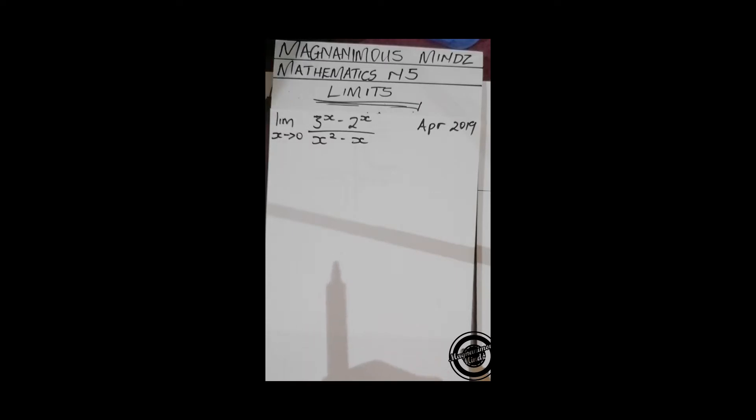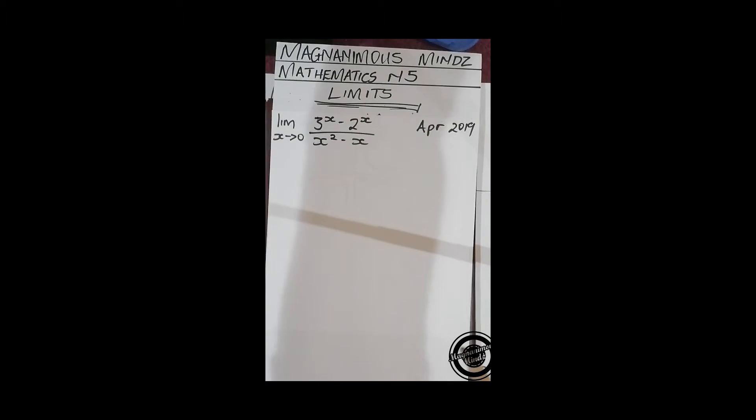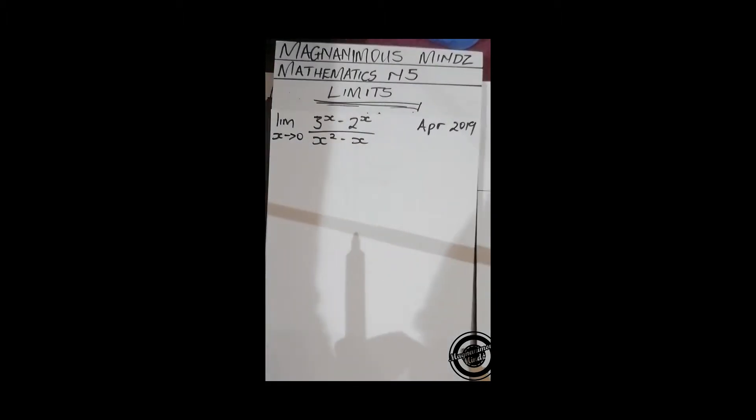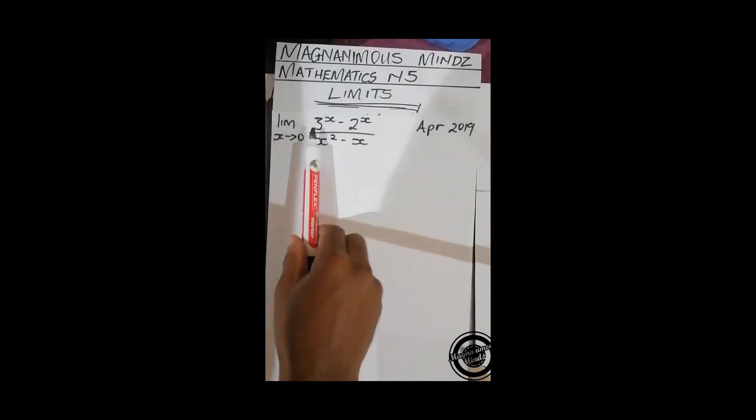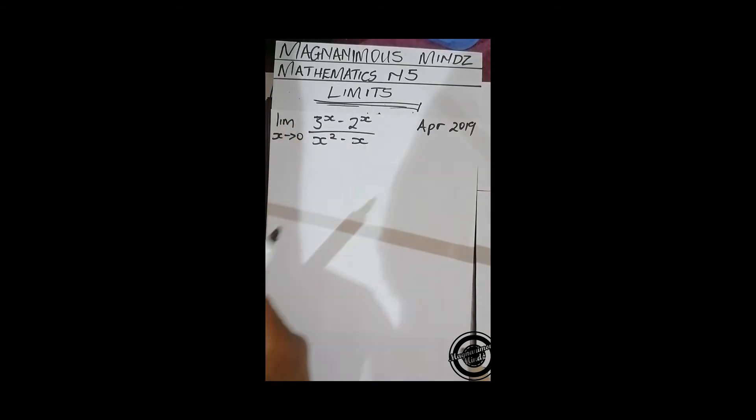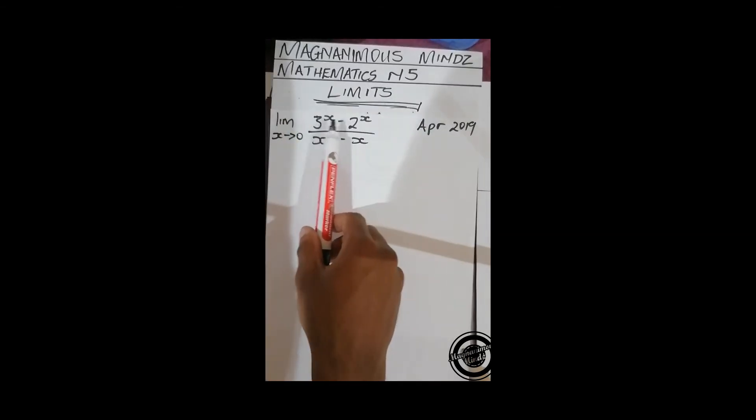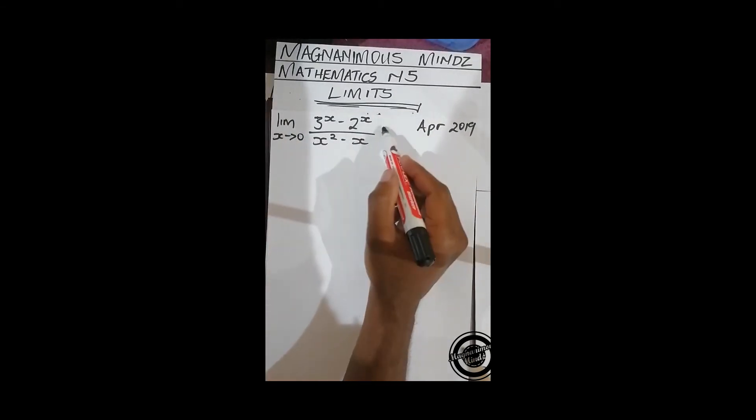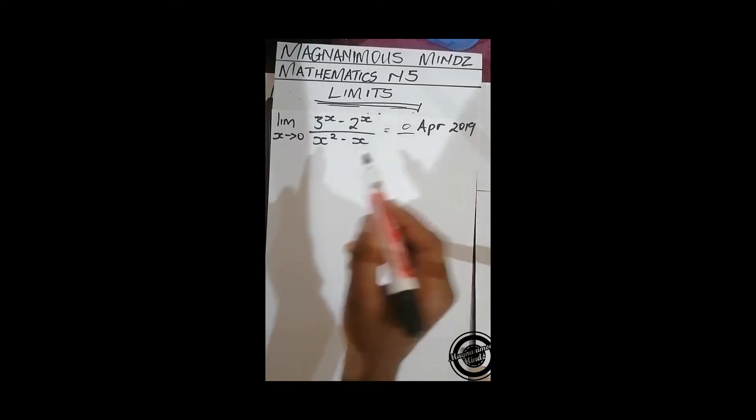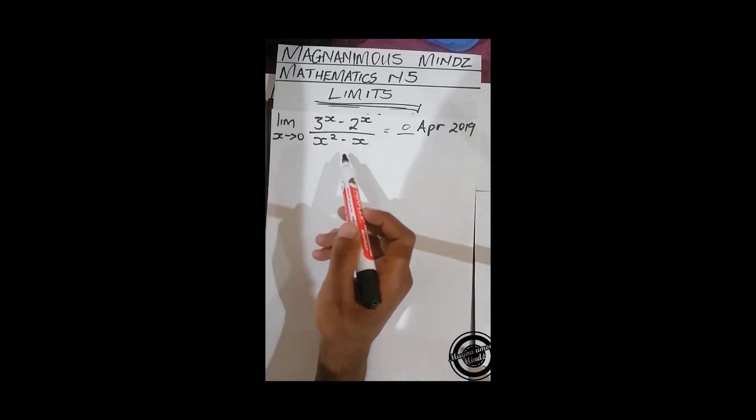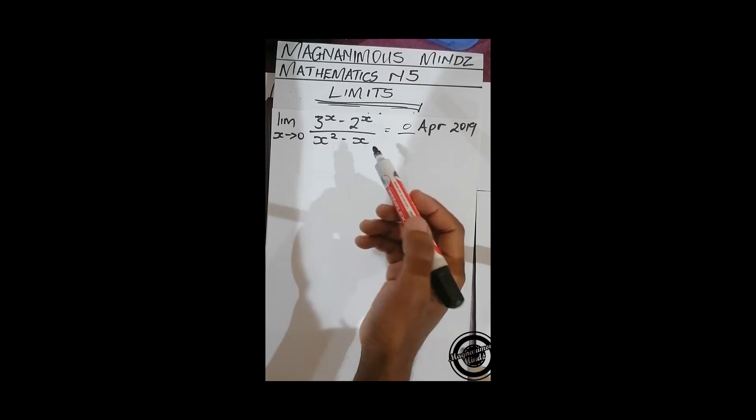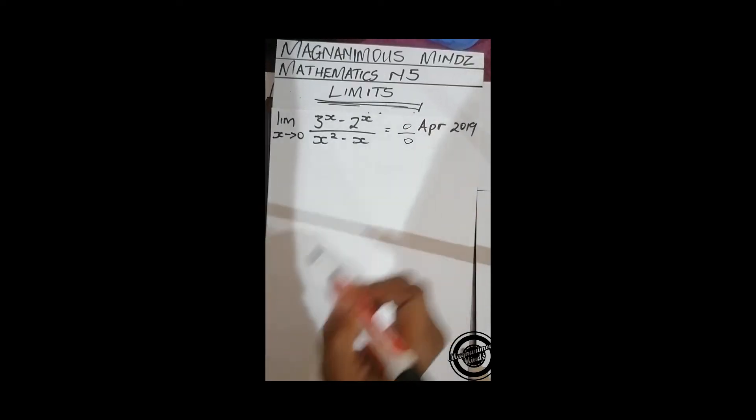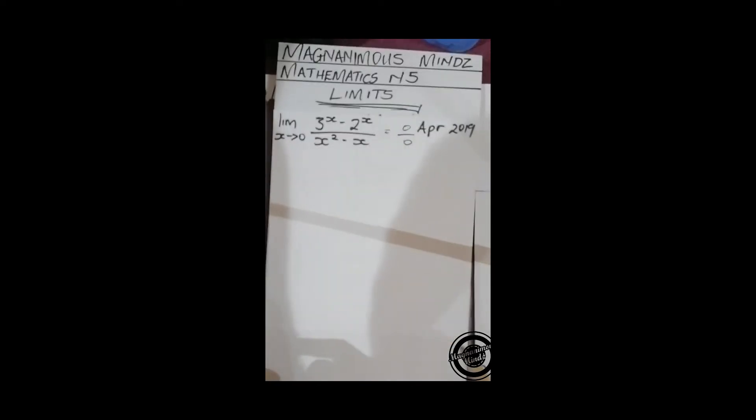If we directly substitute in this case, you'll realize that this is going to give us 0 over 0. Anything to the power 0 gives us 1, so here it's going to be 1 minus 1, which is 0. And then here we've got 0 squared, which is 0 minus 0, which will also give us 0. So we've got an indeterminate form.